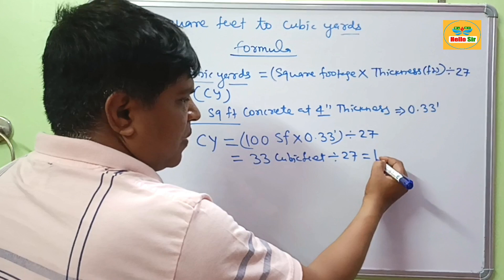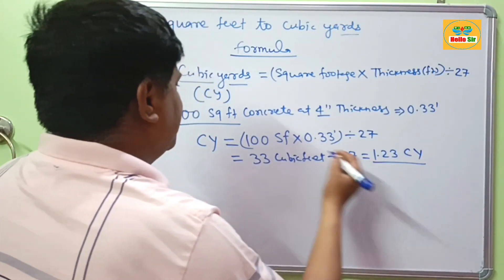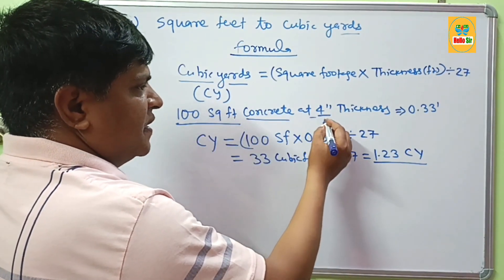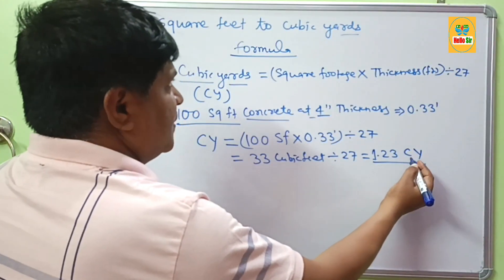This will be about 1.23 cubic yards. It means 100 square feet of concrete at 4 inch thickness is equal to 1.23 cubic yards.